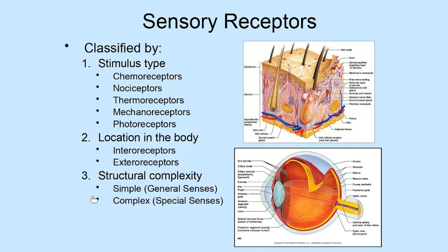Another way to classify receptors is based on their location in the body. Receptors located deep within organs are referred to as interoceptors, whereas receptors located more externally, such as in the skin, are called exteroceptors. For example, the stretch receptors in the stomach are internal — a good example of interoceptors. The Pacinian corpuscles, Meissner's corpuscles, and the eye are structures located at or near the body surface — good examples of exteroceptors.